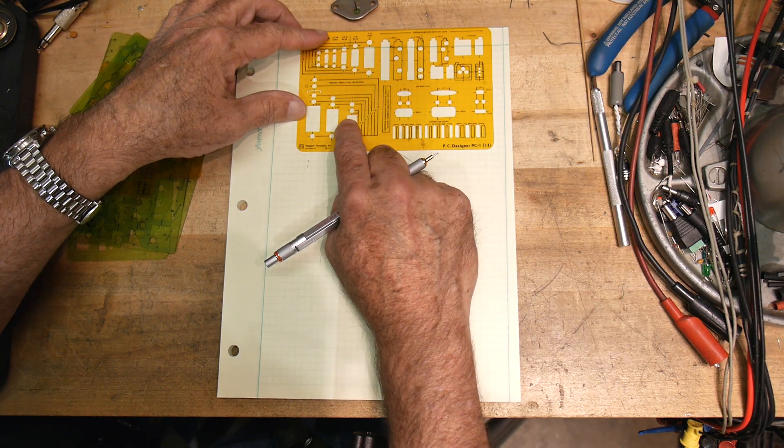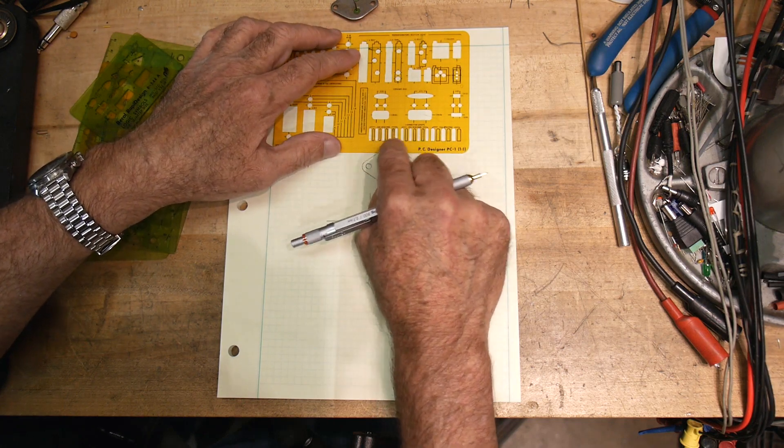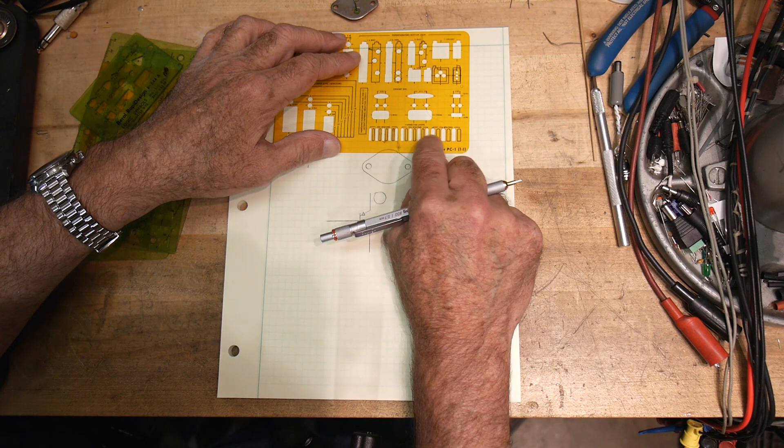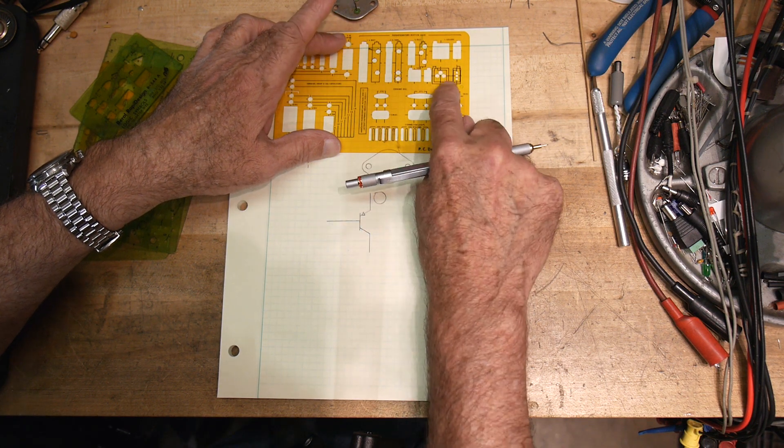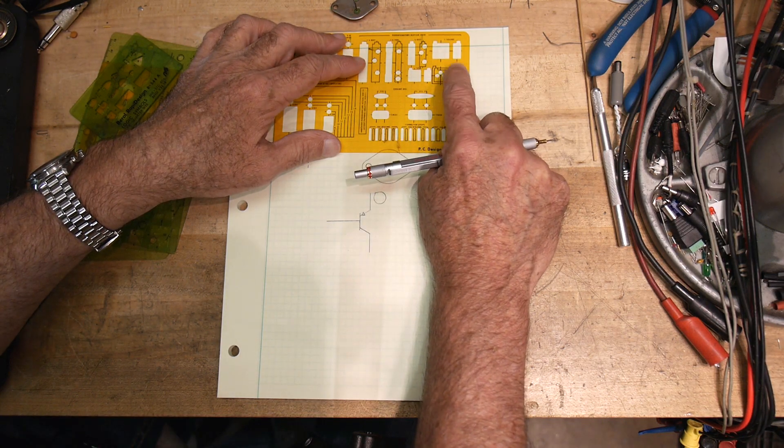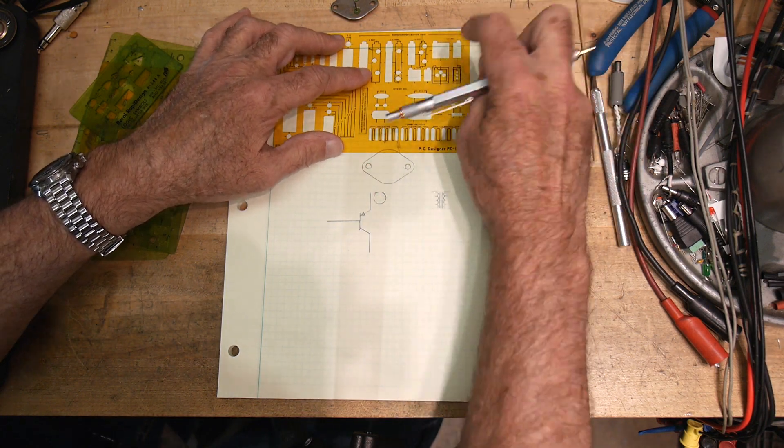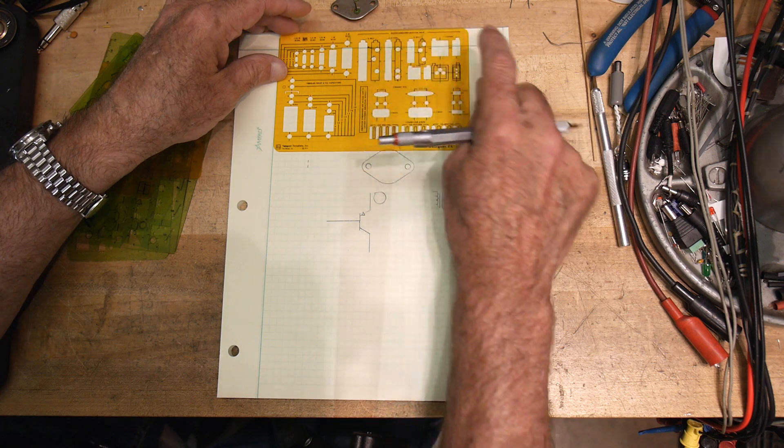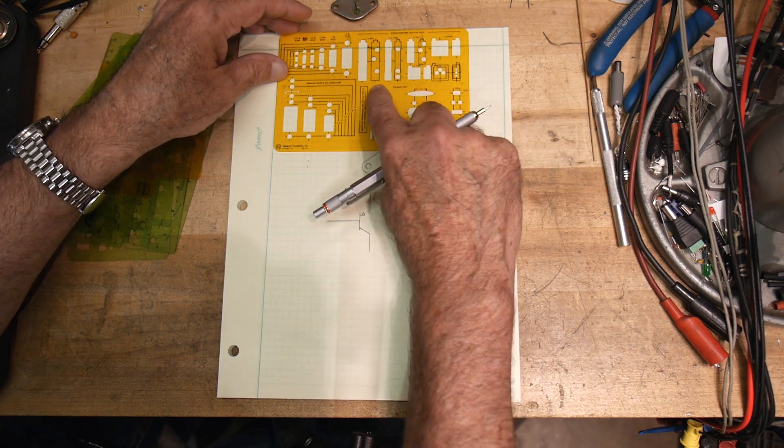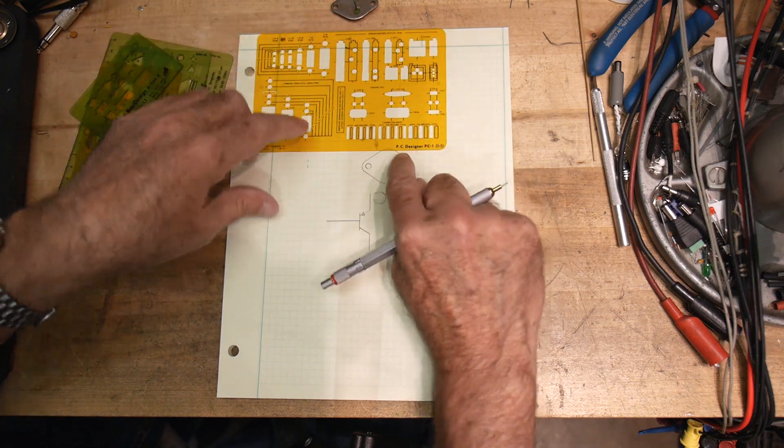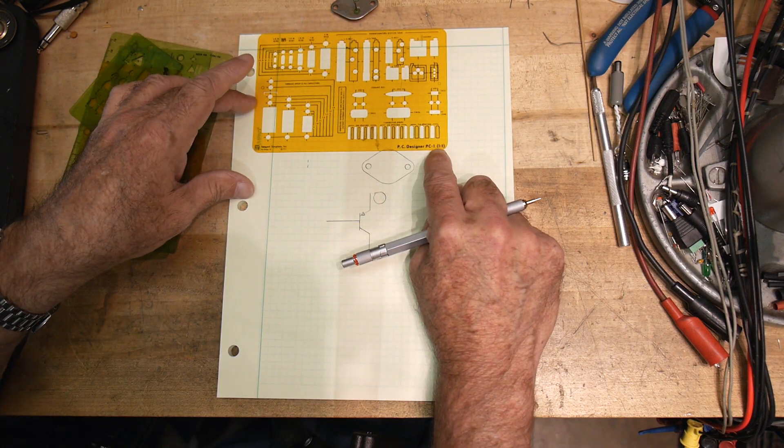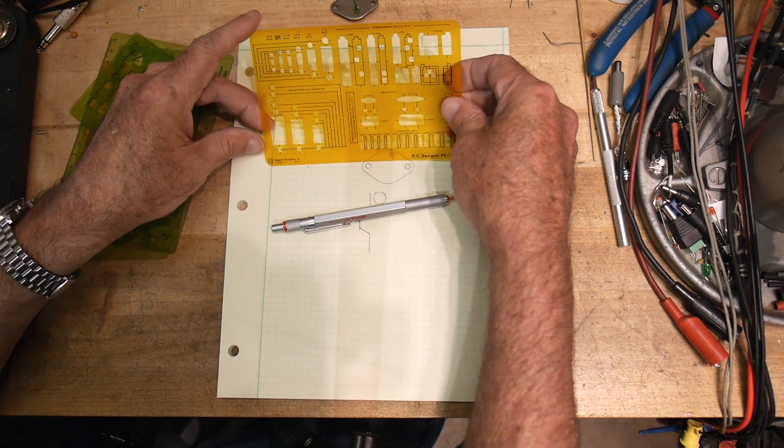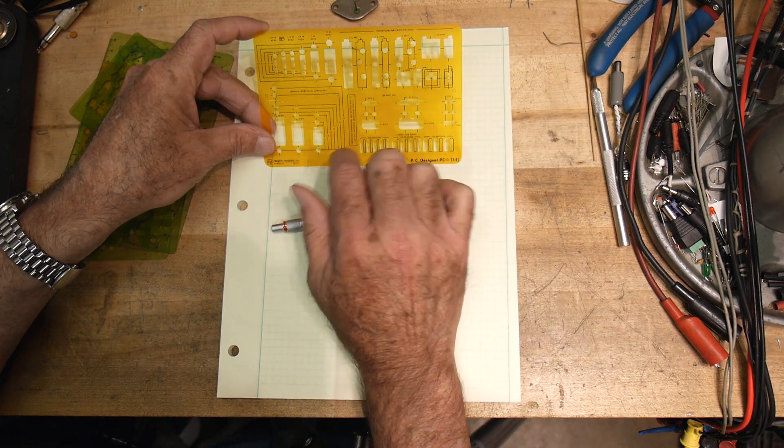Here's some capacitors. Here's an edge connector on the side of a PC board. Different types of spacings—100 mil spacings, quarter inch, eighth inch spacings, and 0.156. Here's some nice layout for potentiometers. The pin spacing and the package spacing. Different types of potentiometers and different types of capacitors. I like that one. PC Designer, PC-1, one-to-one. So this is actual size. This is by Tangent Template Incorporated, San Diego, 1974.